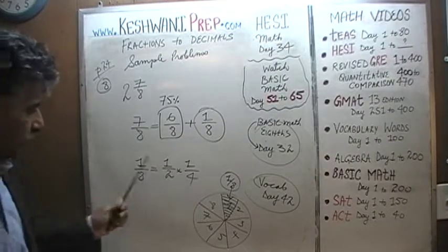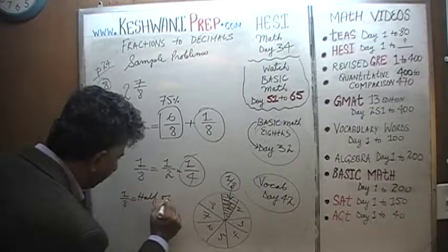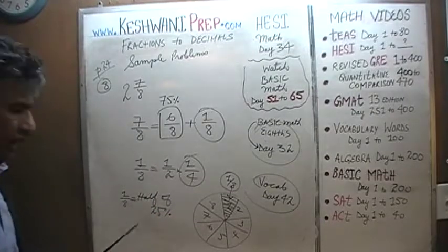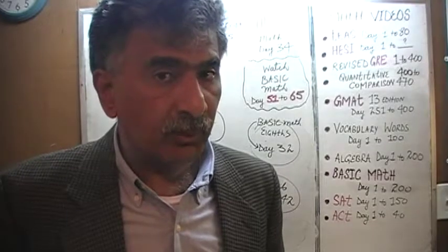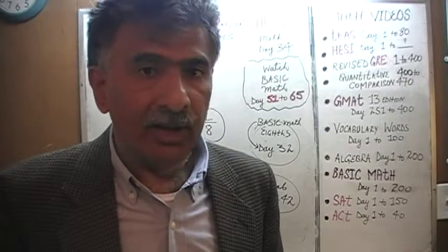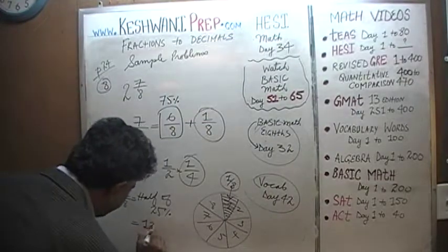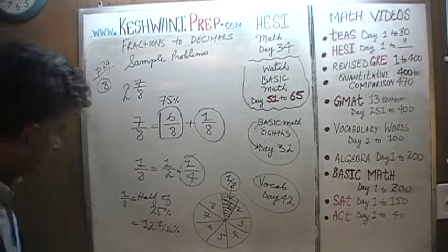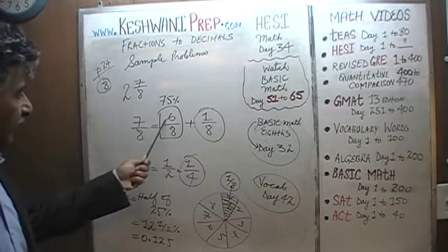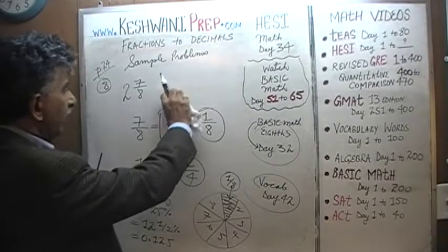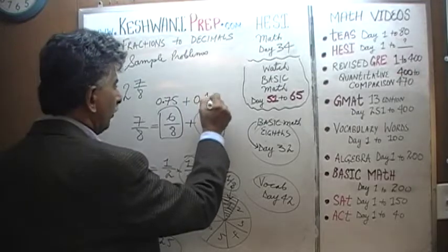We know a quarter is 25%, so an eighth is simply half of 25%. Half of 24 is 12, so half of 25 must be 12 and a half. Therefore 1/8 is 12.5%, and 12 and a half percent expressed as a decimal is simply 0.125. And 6/8 is 75%, which can be written as 0.75.